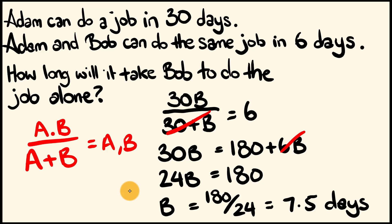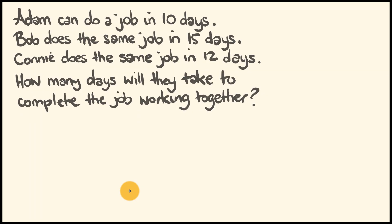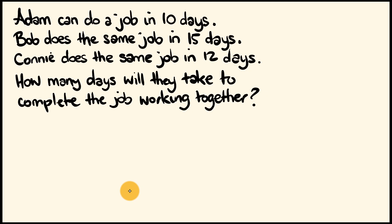Is that what you got? If you did, congratulations. Give yourself a big thumbs up. What about we have a look at the third question now? So, this one involves three different people. We have Adam can do a job in 10 days. Bob can do the same job in 15 days. Connie can do the same job in 12 days. How many days will it take them to complete the job working together?